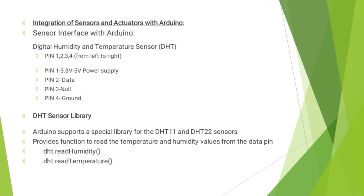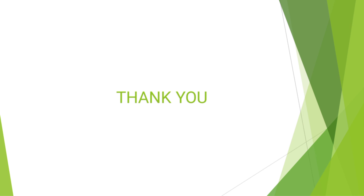DHT sensor library: there are two main libraries for the DHT sensor. Arduino supports a special library for the DHT11 and DHT22 sensors, which provides functions to read temperature and humidity values from the data pin — DHT.readHumidity() and DHT.readTemperature(). Thank you.